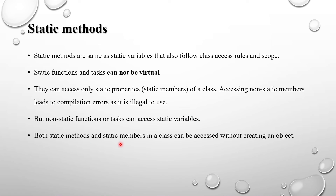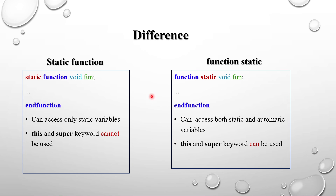One important point: both static methods and static members in a class can be accessed without creating an object. You don't need to instantiate the class to access static members — we will see this in the code.